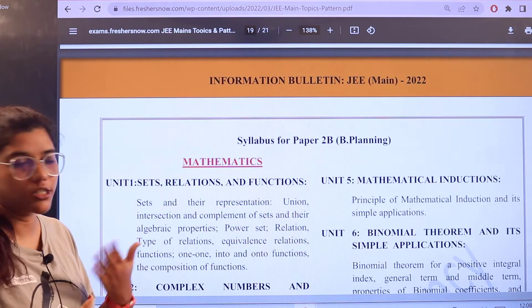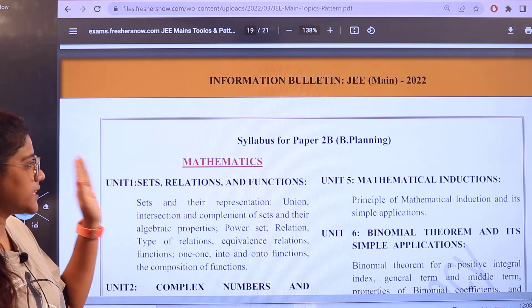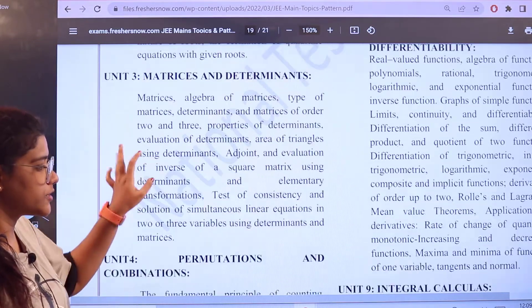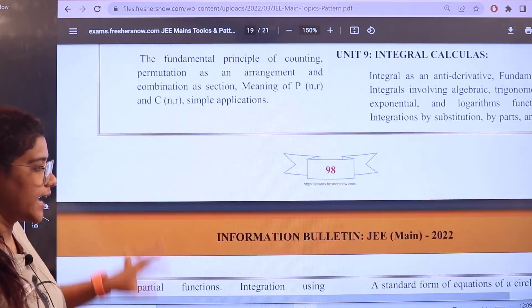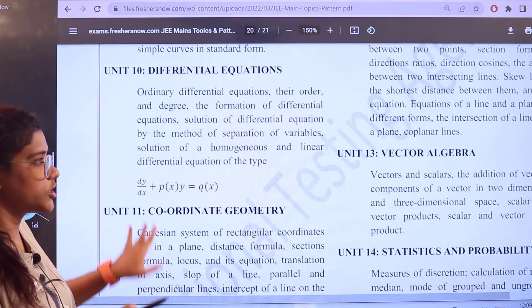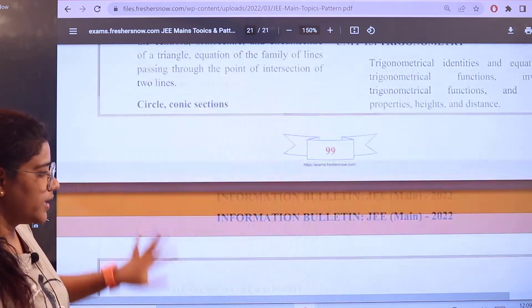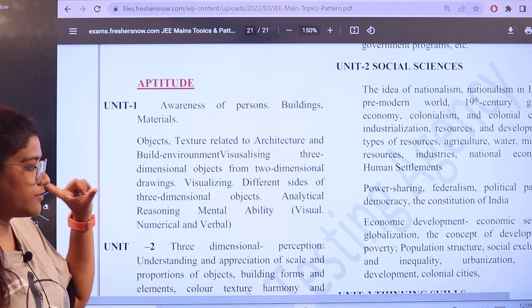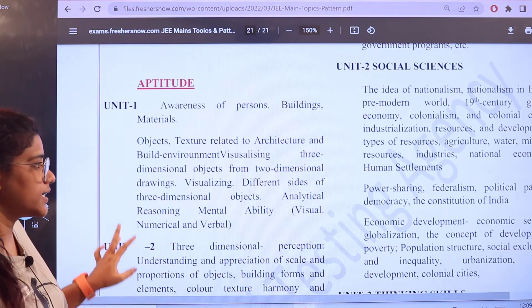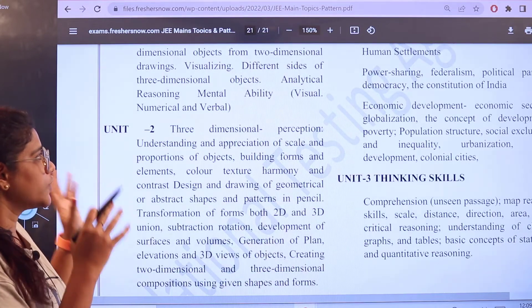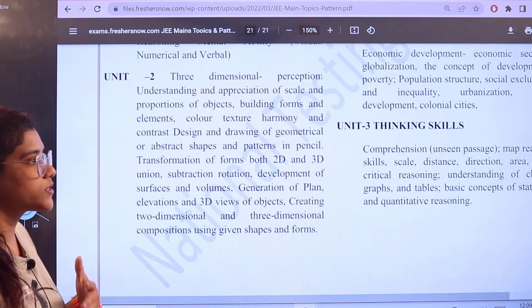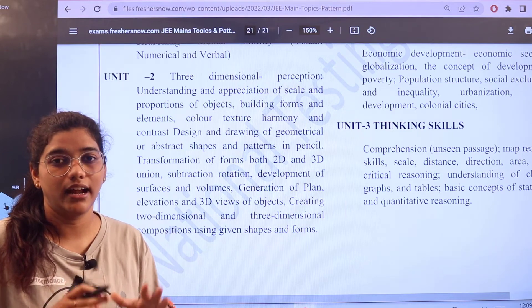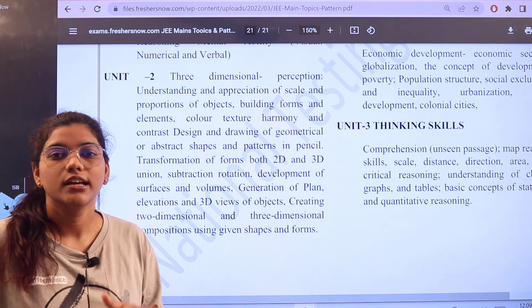Next for Paper 2B which is Planning. For Mathematics it is the same which is Sets, Relations and Functions, Binomial Theorem, Sequences and Series, then you have the Determinants, Matrices, then you have Permutations and Combinations, Integral Calculus. So all of the topics which are repeated, Three Dimensional Geometry, Vector Algebra, etc. Then for Planning you have General Awareness and Social Sciences. For Aptitude, again as I've mentioned, Three Dimensional Perceptions, Two Dimensional Visualizing, different sides, abilities of reasoning and mental ability, shapes and forms, quantitative reasoning for thinking skills, and further comprehension. So these are the different topics which are divided under section-based units.